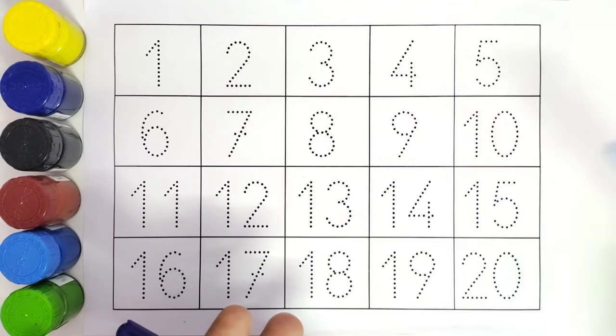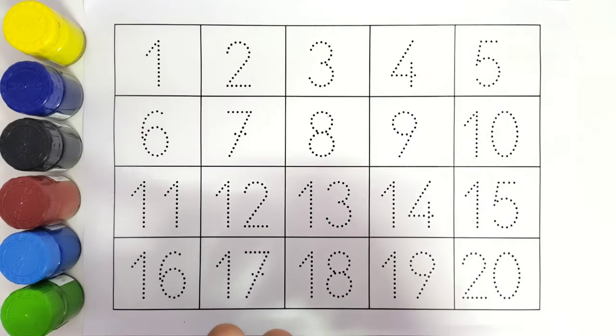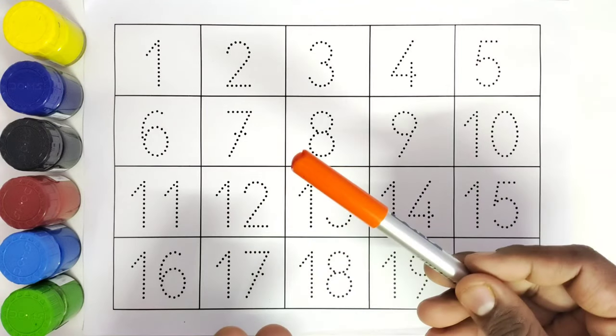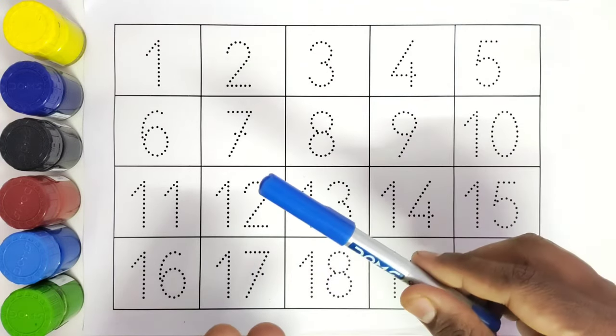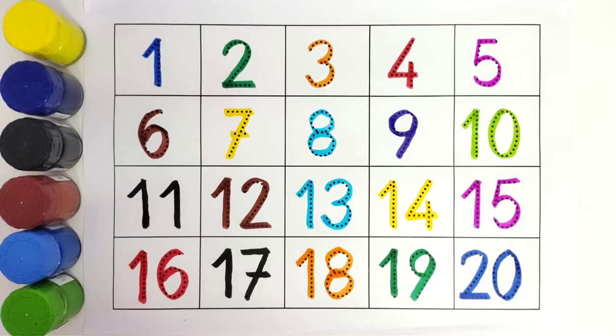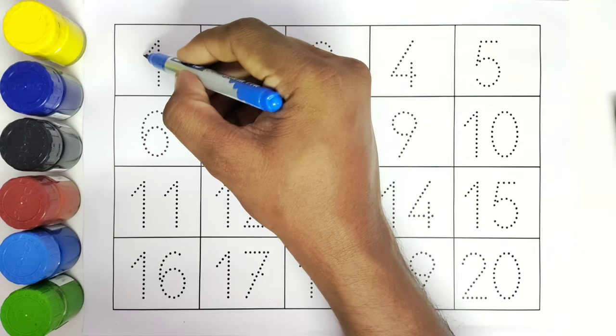This is light blue color, this is purple color, this is light green color, this is black color, this is brown color, this is dark pink color, this is red color, this is orange color, this is dark blue color, this is dark green color. So we will start coloring all these numbers. This is 1, number 1.